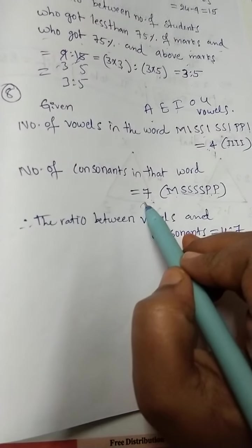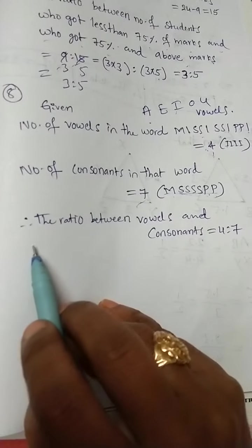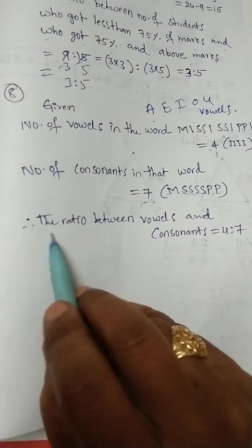Now, vowels and consonants, we should simply write the ratio. The ratio between vowels and consonants: 4 is to 7. That is only our requirement.